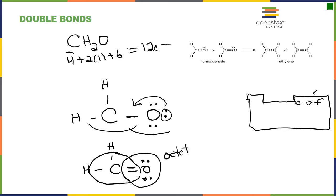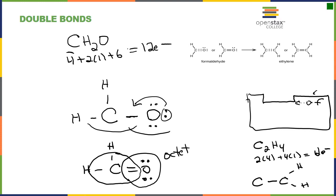For ethylene, C2H4, we have two times four plus four times one for a total of 12 electrons. Both carbons share the center; we put two hydrogens on each carbon. That arrangement uses 10 electrons in five single bonds, leaving two more electrons. We need one more bond between the carbons, giving us a double bond — and that is the Lewis structure for ethylene.